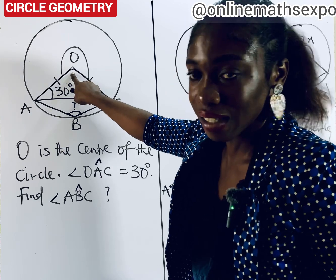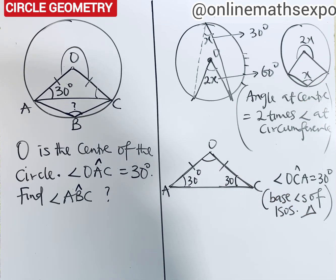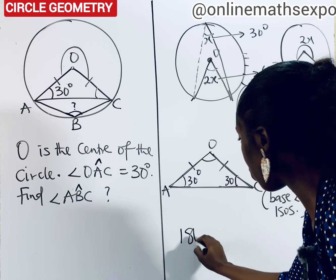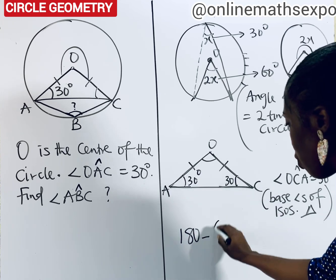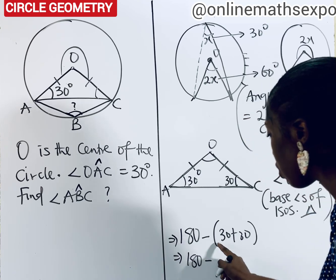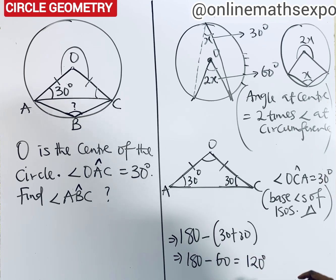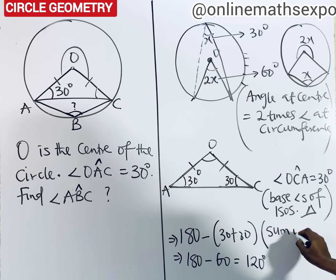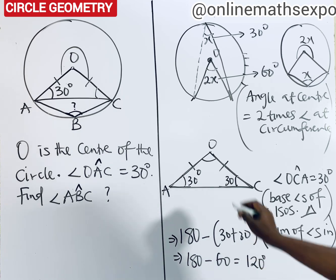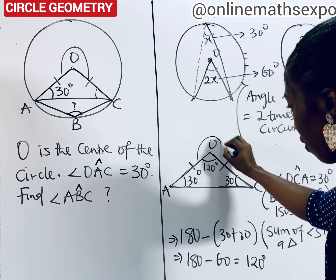Now to find angle AOC at the center, we add all the angles — they must equal 180 degrees because they are angles in a triangle. So we do 180 minus the sum of the two base angles: 180 minus (30 plus 30) equals 180 minus 60, which gives us 120 degrees. Our reason: sum of angles in a triangle.